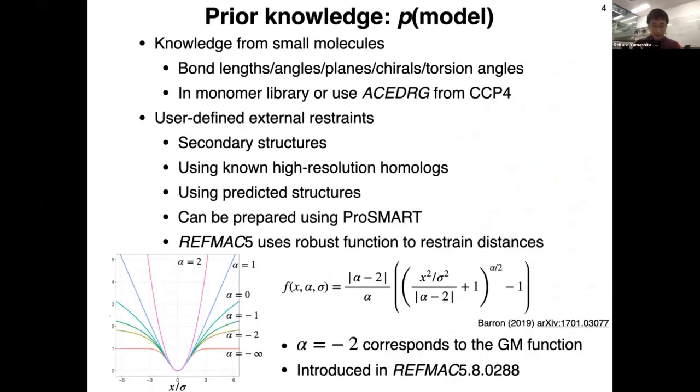I can skip this slide because it's covered by others. But I should mention that RefMac recently replaced its robust estimator function for external distance restraints. Previously it used the Geman-McClure function to allow large deviation in external restraints, but it's replaced with a more general robust function where Geman-McClure is only a special case. This version is not released yet and we need further testing, but this is a big change in RefMac.